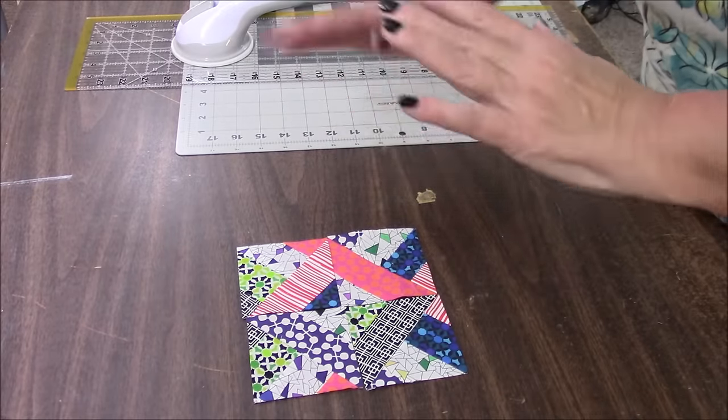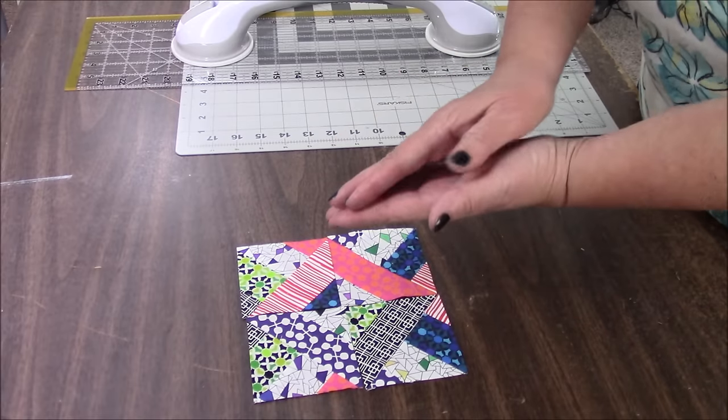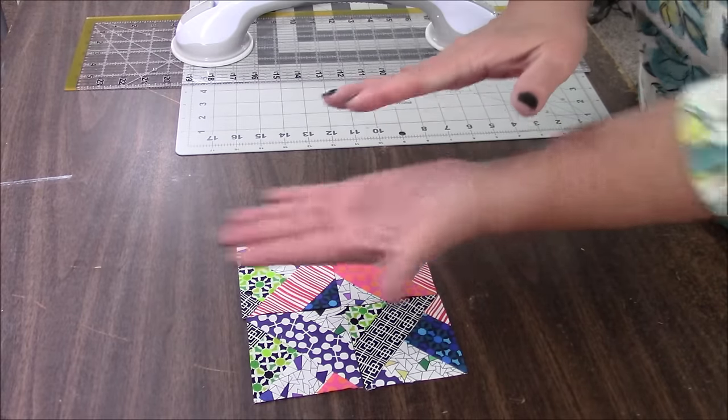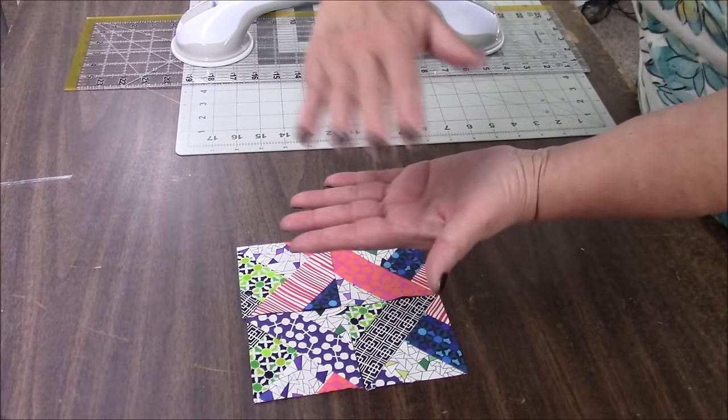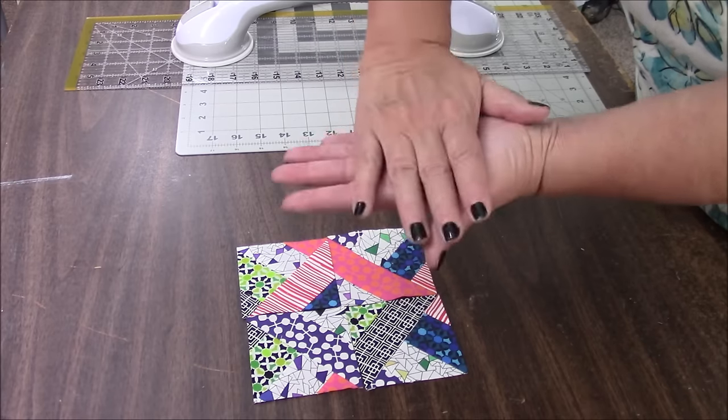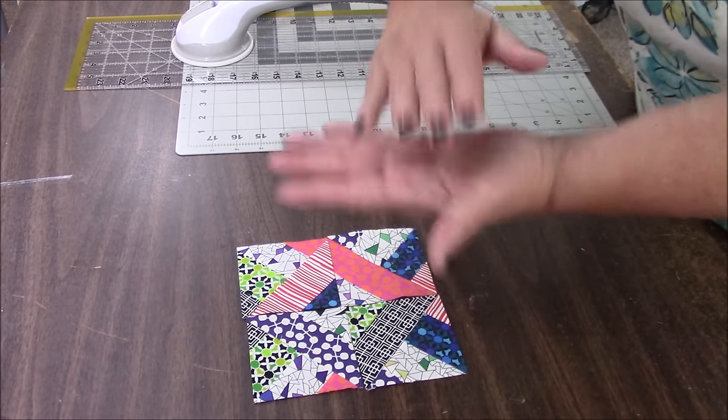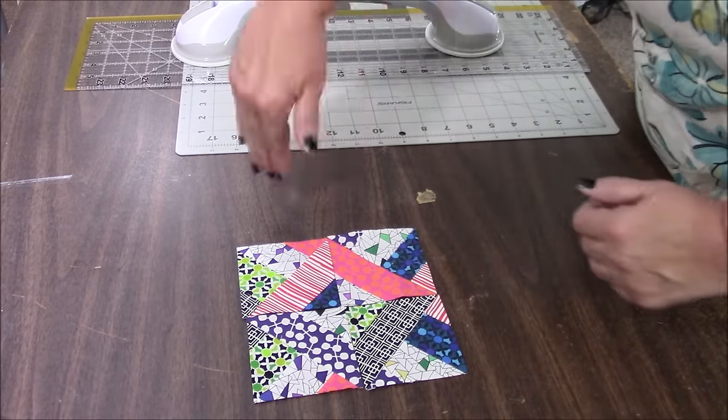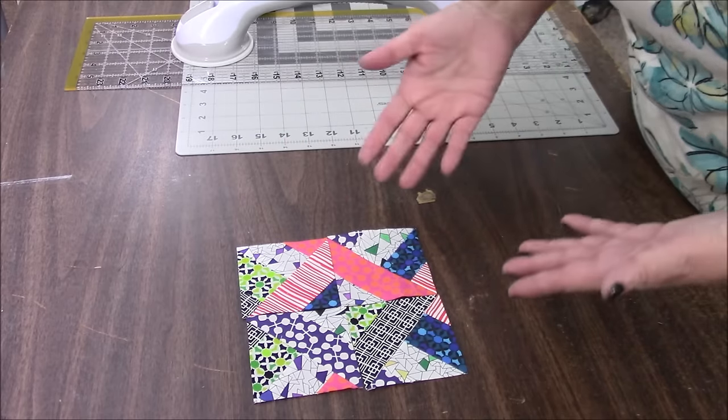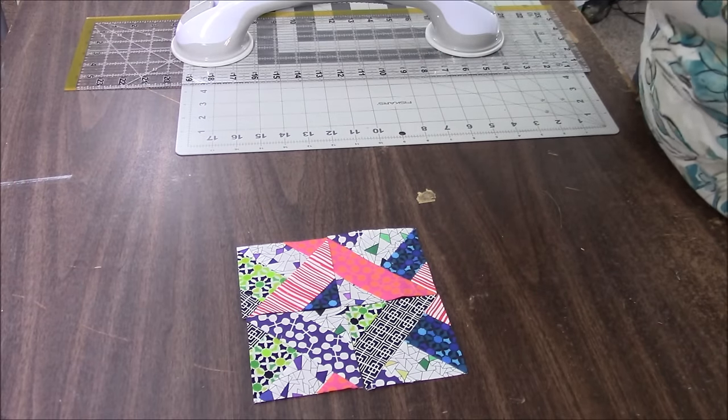And then the other thing is you want to do them right sides together and you want to turn one. So you want stripes going this way on one and then the other one face down like this, the right sides together. And then you sew all around, you cut the diagonal, you open them up, and then you marvel at what you just did.